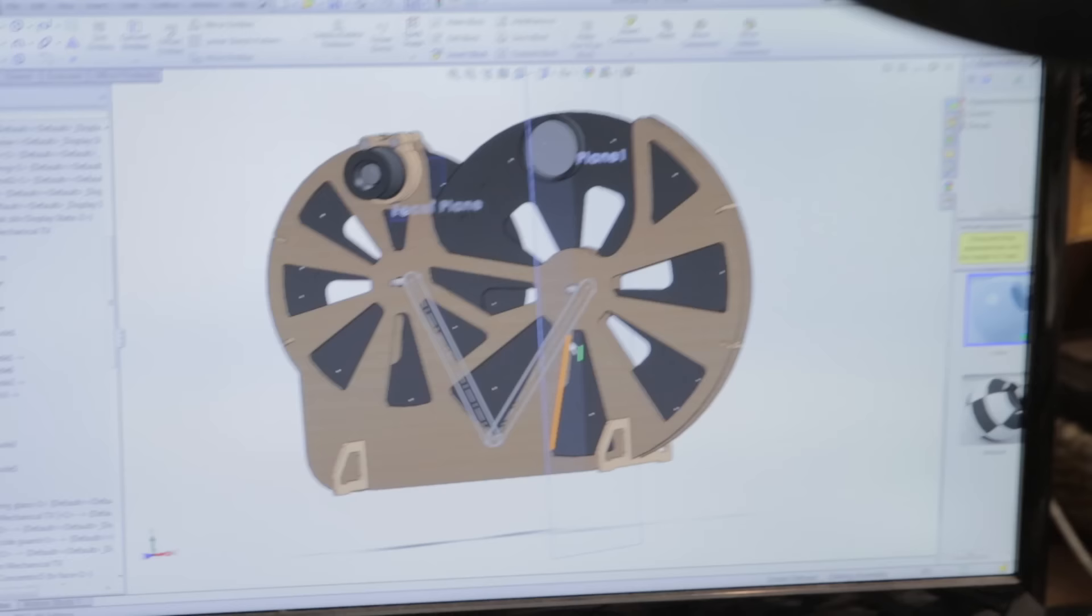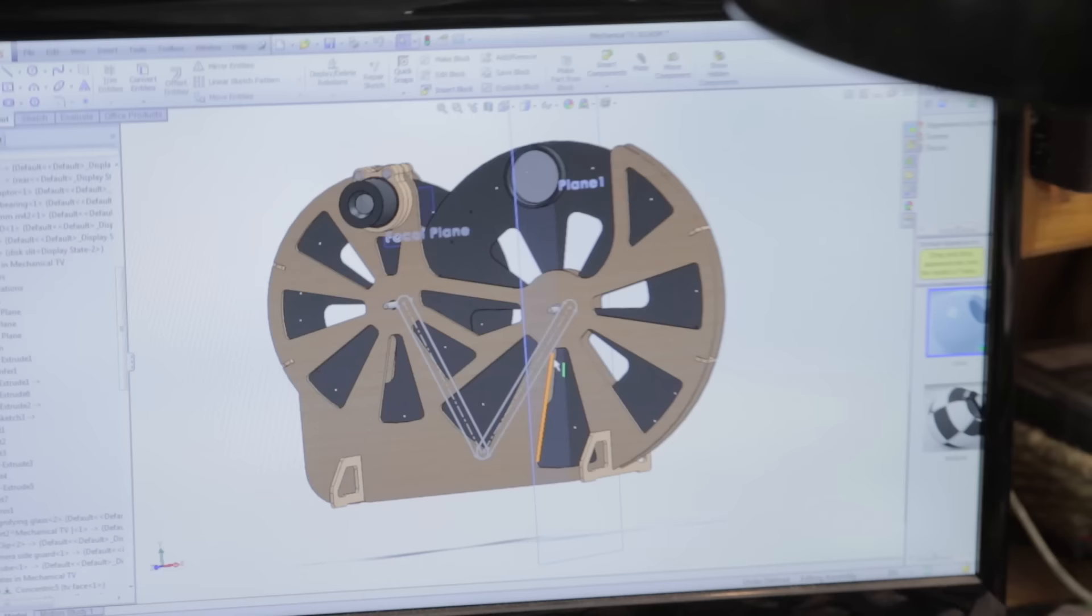I think the CAD model is at a point where we can try to test cut some pieces. It's not finished yet, and there's definitely gaps we're going to have to fill as we get to them. Let's cut a test piece out of cardboard of the main structure.